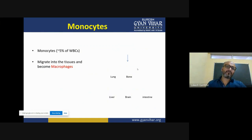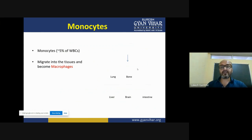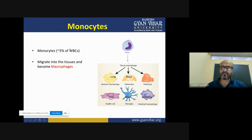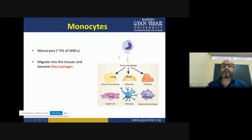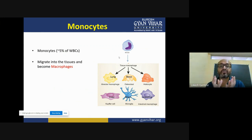Let us begin with monocytes. In the last lecture, I narrated clearly that white blood cells have two types of lineages: granulocytes and agranulocytes. In agranulocytes we talk about lymphocytes and monocytes. Monocytes form around five percent of the total WBCs. This monocyte circulates in the blood, and the moment it reaches a specific tissue, it differentiates and is now called a phagocytic cell — the macrophage.